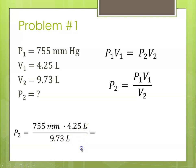Now we're going to cancel our units, so liters cancels out, that leaves us with millimeters of mercury and that's pressure and that's what we want. Plugging this into the calculator, it's 755 times 4.25 divided by 9.73, and the calculator gives me this number which has way too many significant digits.